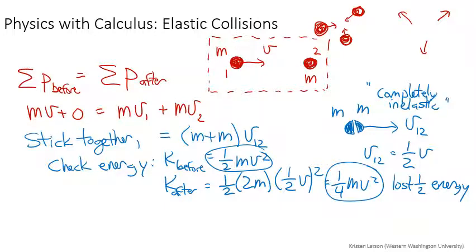Where energy is lost. Elastic collisions mean that not just momentum is conserved, because the momentum of that system is always conserved, but it also means that the mechanical energy is also conserved.